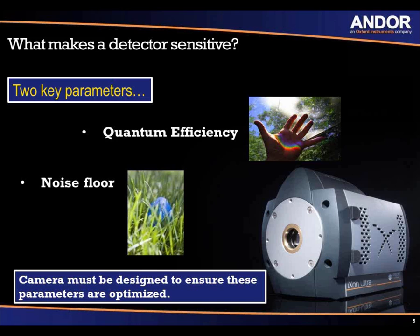The noise floor is really made up of read noise and dark noise. Read noise is the usual camera detection limit — the faster you read out, the higher the read noise; the slower you read out, the lower the read noise. This is specific to CCD cameras. With EMCCD cameras, you can effectively remove the read noise, and with sCMOS cameras, the read noise is inherently low. With a general CCD camera, controlling the read noise means reading out slowly.